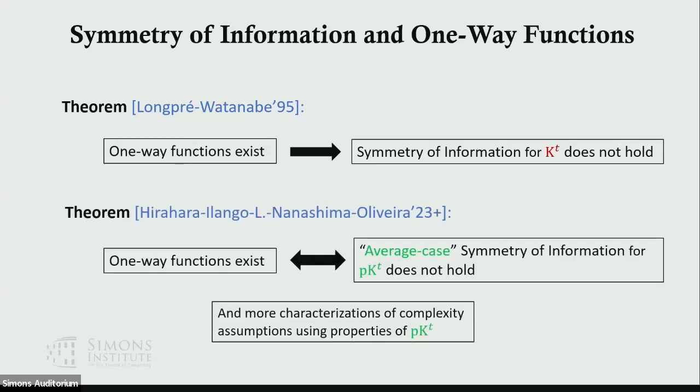In an upcoming work with Shuichi Hirahara, Rahul Ilango, Mikito Nanashima, and Igor Oliveira, we show that one-way functions exist if and only if some average case version of symmetry of information for pkt does not hold. So again, pkt seems to be the right notion to connect one-way functions and symmetry of information. In the same paper, we also use other properties of pkt to characterize more complexity assumptions, such as P not equal to NP, or NP on average. There will be a talk on this in the upcoming workshop of the meta-complexity program.